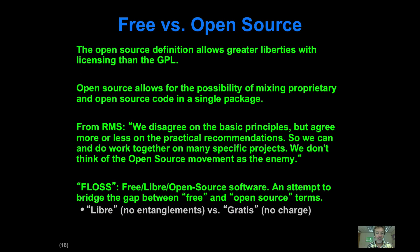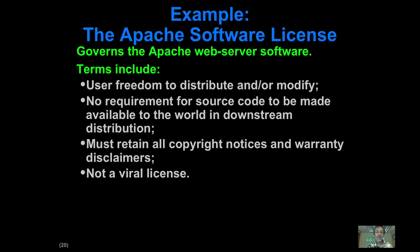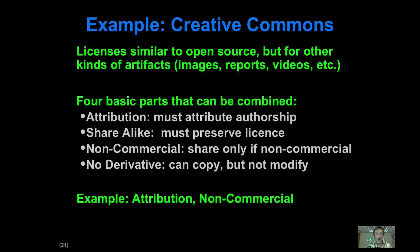So we have free software — the GNU idea — which essentially guarantees that work produced in an open manner remains just as open as it was originally. Versus those who say: create things openly, but allow future users to modify things or change the license in less restrictive ways. There's also a group called FLOSS, which attempts to create a big tent over both camps. Specific examples include the MIT license — very permissive, you can do almost anything as long as you include the license in what you distribute — the Apache Software License, and the Creative Commons license, which is similar but intended for non-code artifacts like images, text files, or videos.